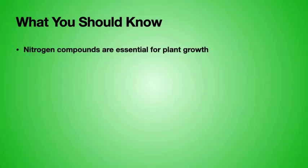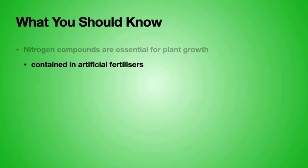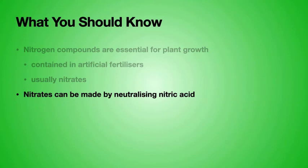You should be aware that nitrogen compounds are essential for plant growth and these are often contained in artificial fertilizers. There are natural fertilizers, but we've been looking at the artificial ones. These artificial fertilizers usually contain nitrogen in the form of nitrates. These nitrates can be made by neutralizing nitric acid. What we're going to be looking at in this video is how we make that nitric acid.